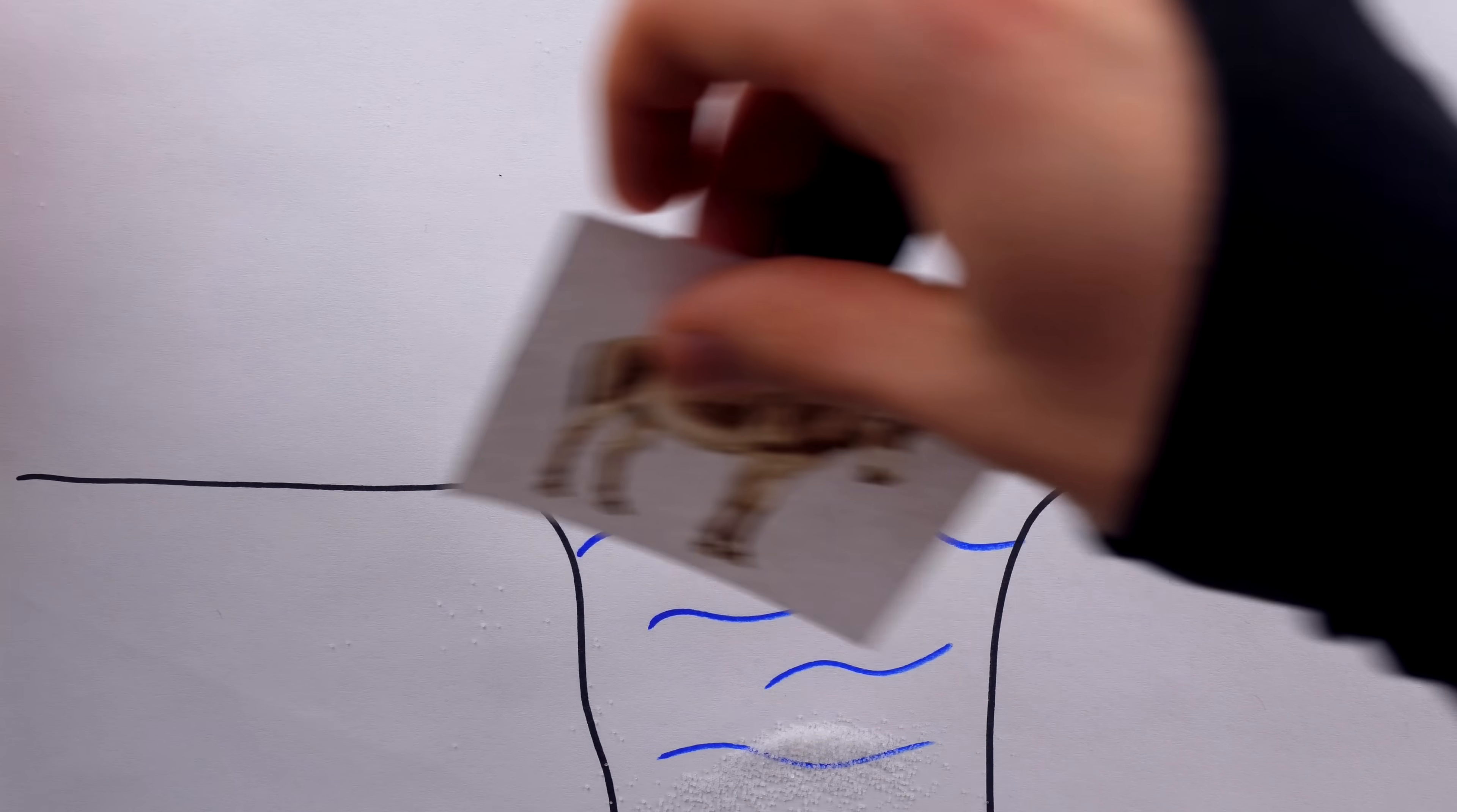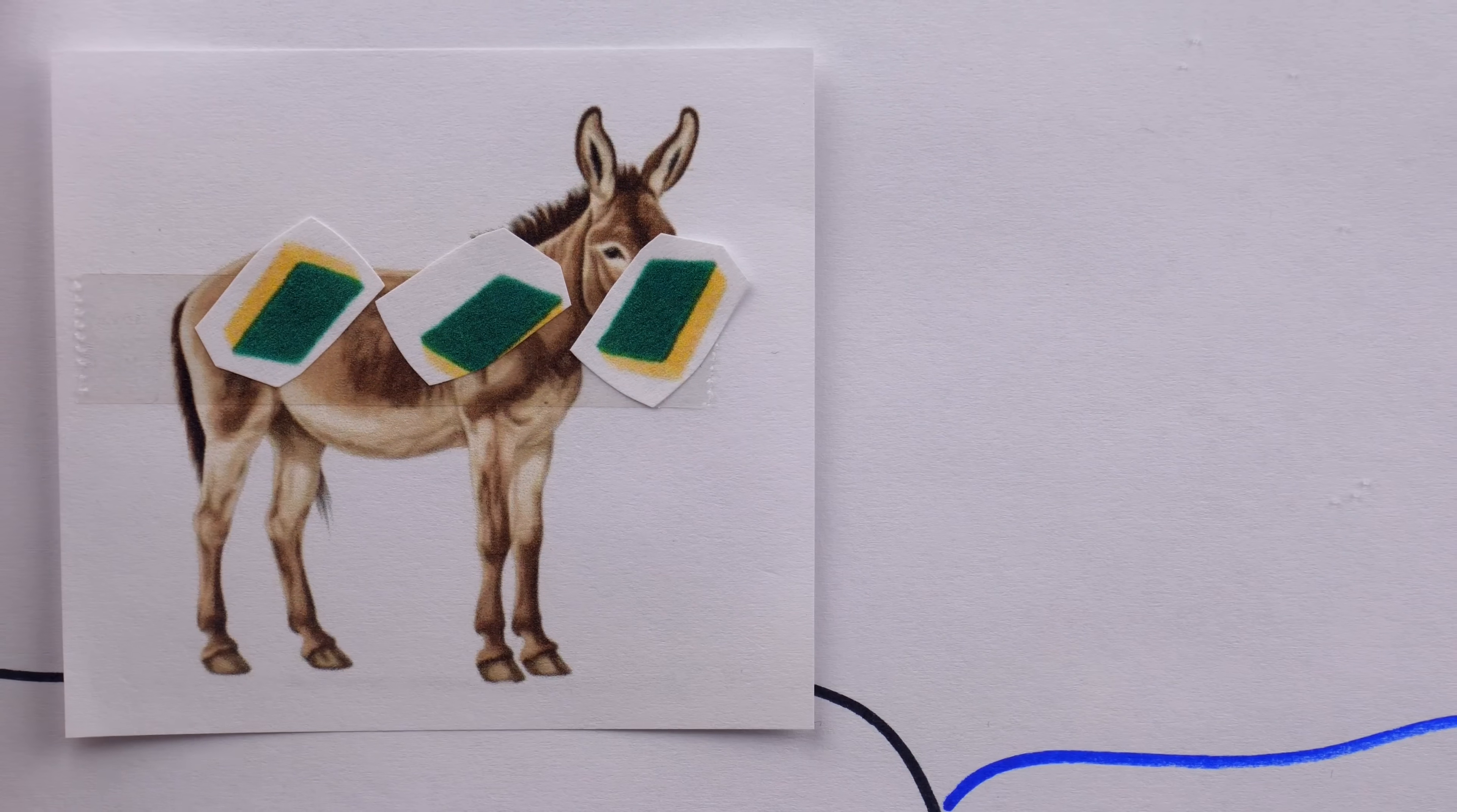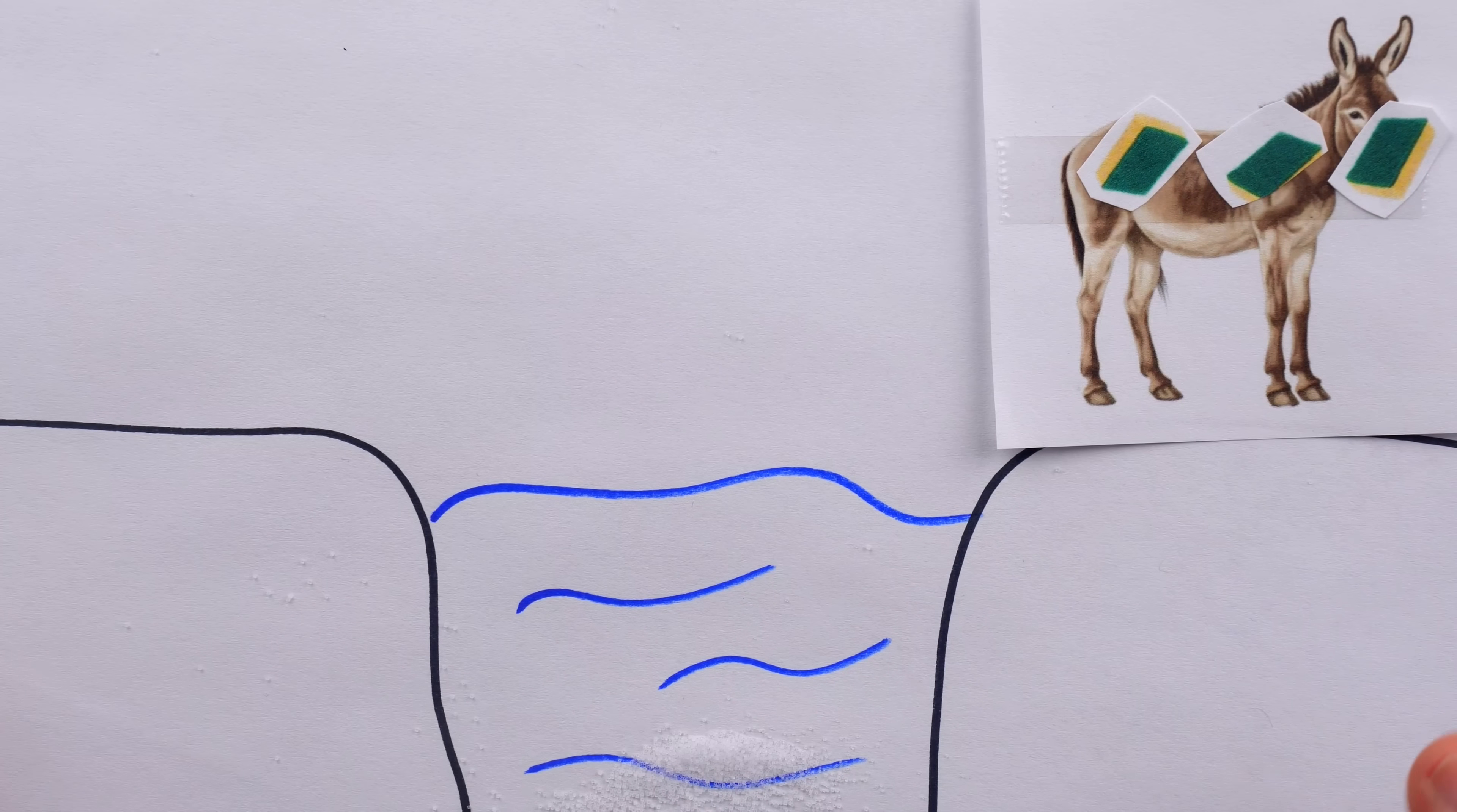So for the next trip, he hatched a very devious plan. Instead of filling the saddlebags with salt, for this trip Thales filled the saddlebags with sponges. And you can imagine the shock of the mule when he tried to dump his weight into the stream next time, and his burden became significantly heavier. And with that, the problem was solved.